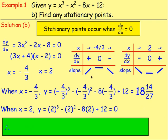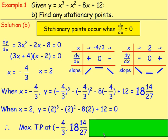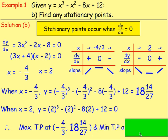Which means there will be a maximum turning point at negative 4 thirds and 18 and 14 27ths. And this one here, when x was 2, that was a minimum. So there'll be a minimum at 2, 0. So that is us with the stationary points.